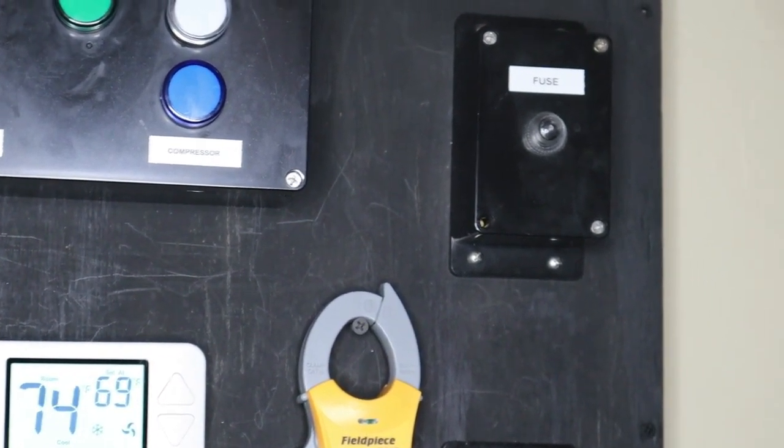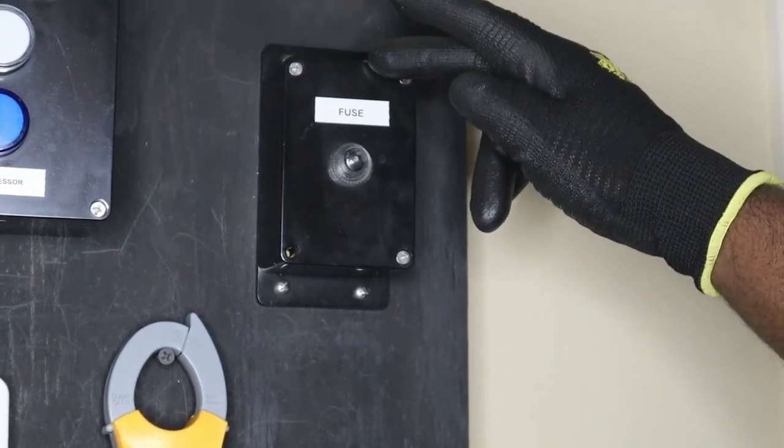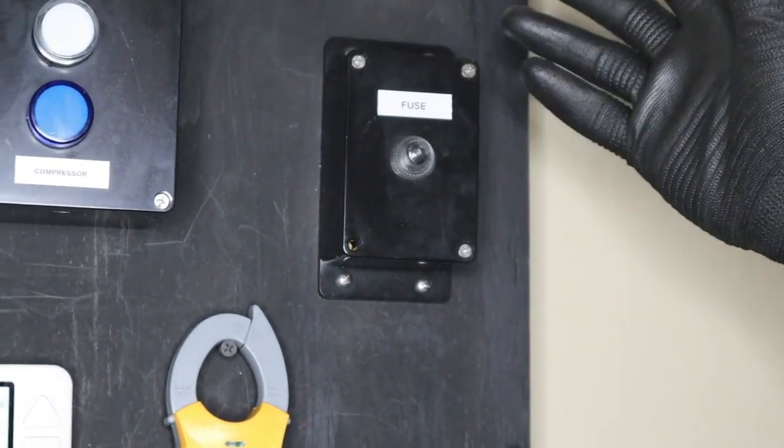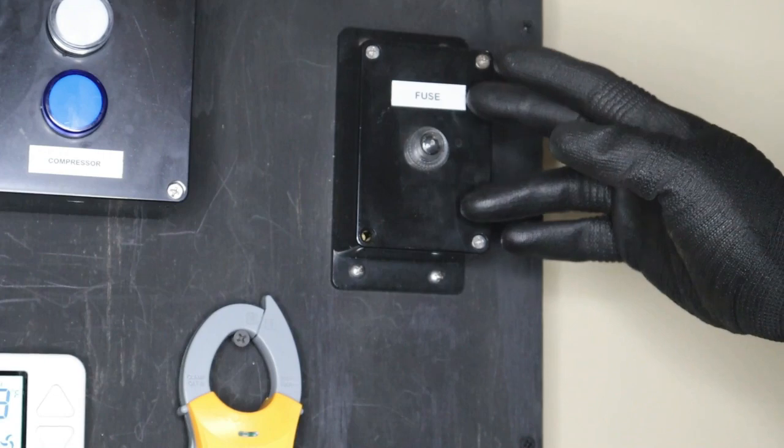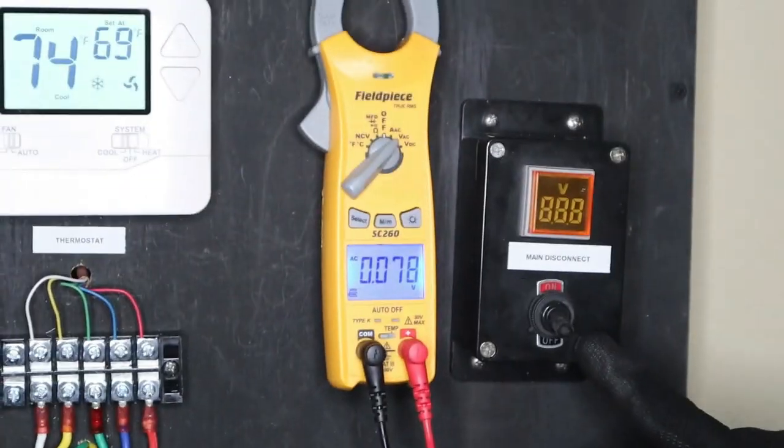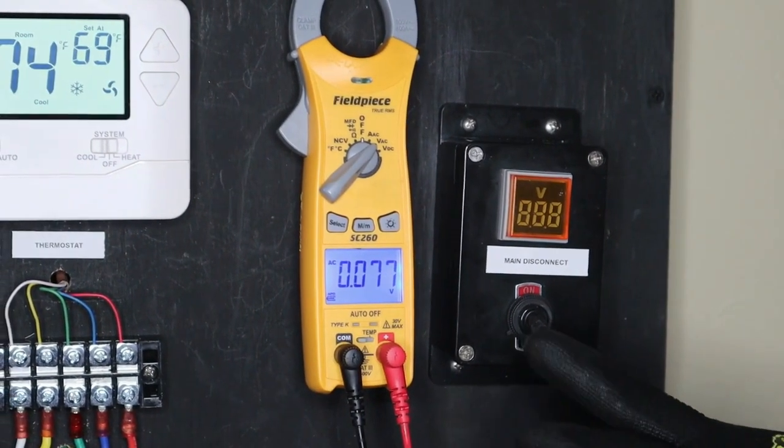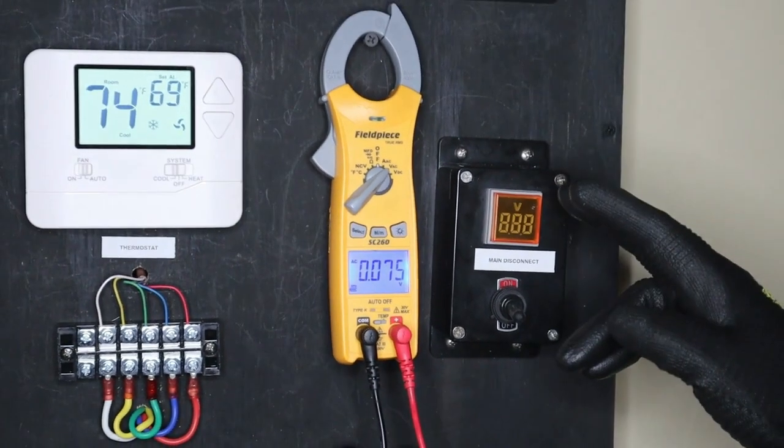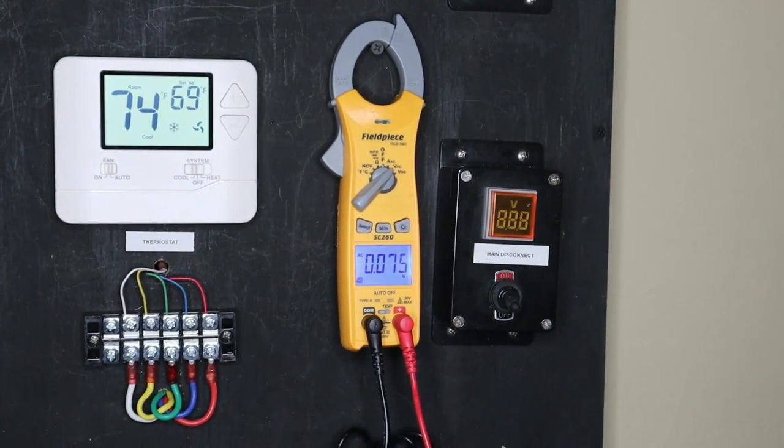So I have 120 volts coming into my fuse or my circuit breaker. It connects to my main disconnect. Now this is where I disconnect or connect power to my terminal strips.